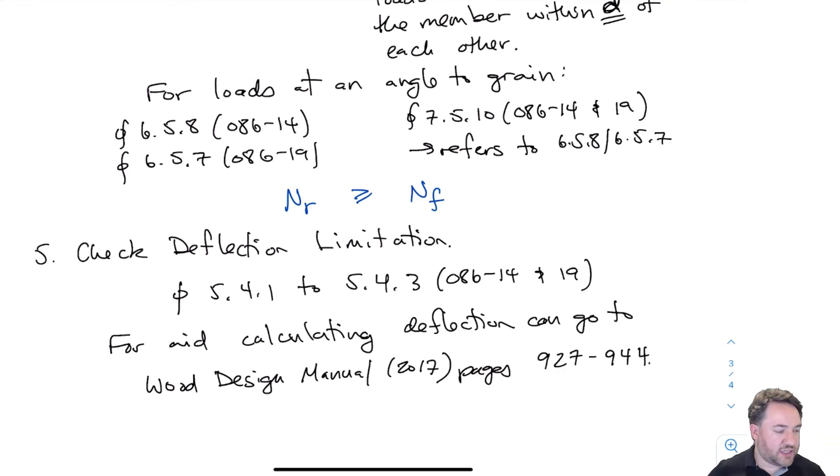The very last check that we need to do is for deflection. So the deflection limitations are provided in 5.4.1 to 5.4.3 in both versions that provides the L over 180, which is the primary resistance against total load. That's the deflection limitation against total load. And calculating the deflections is not specific to wood. So you can use any method you like to calculate the actual deflections of the members, but there is some help in the wood design manual pages 927 to 944, which provide a lot of tables and easy calculation methods in order to determine deflection, which you can compare against that deflection limitation.